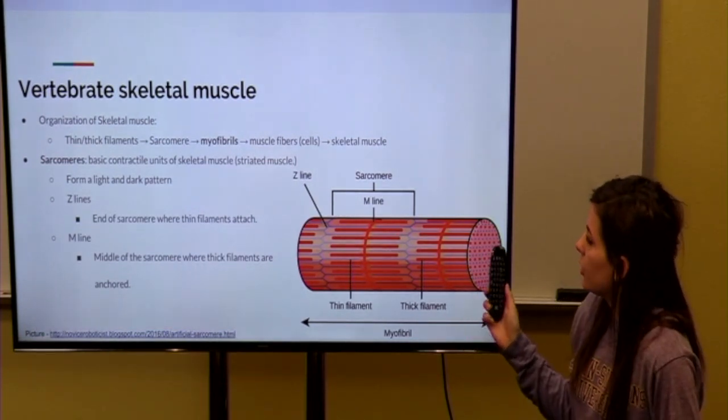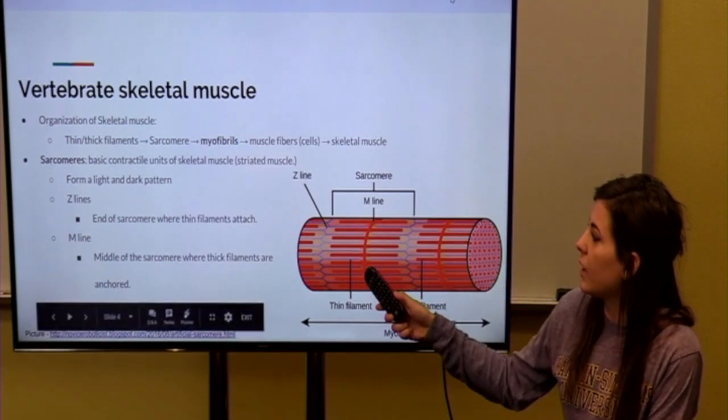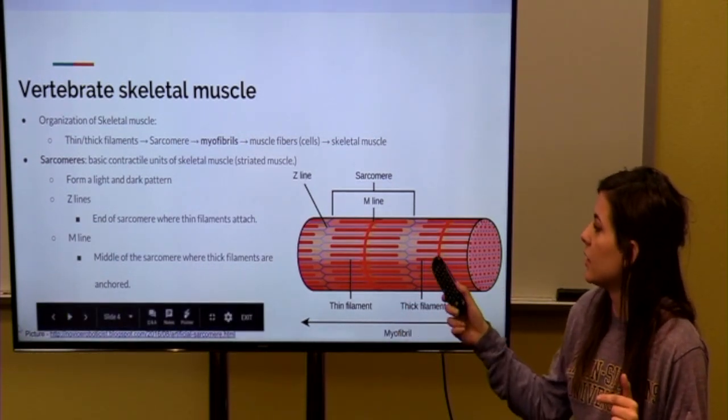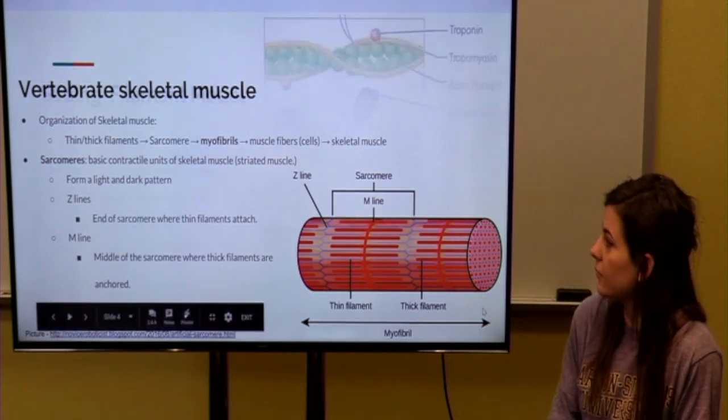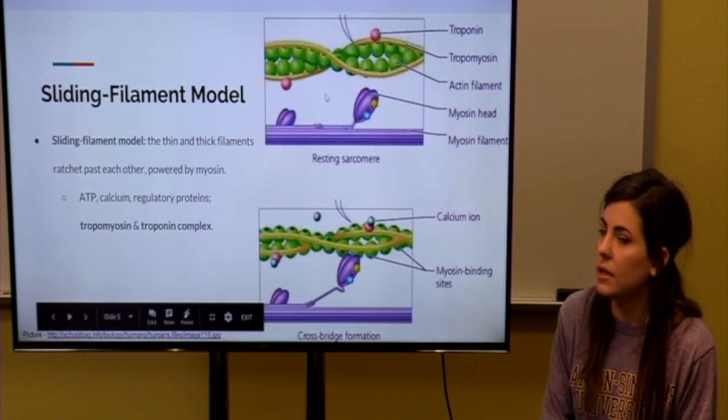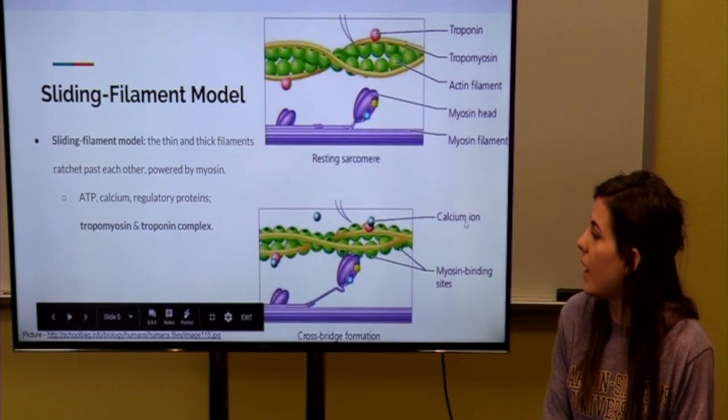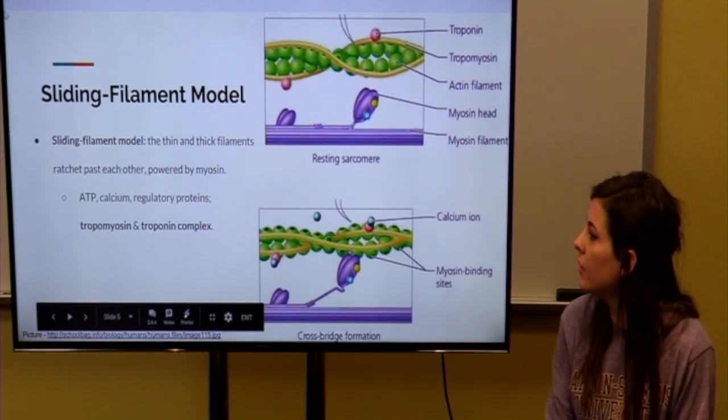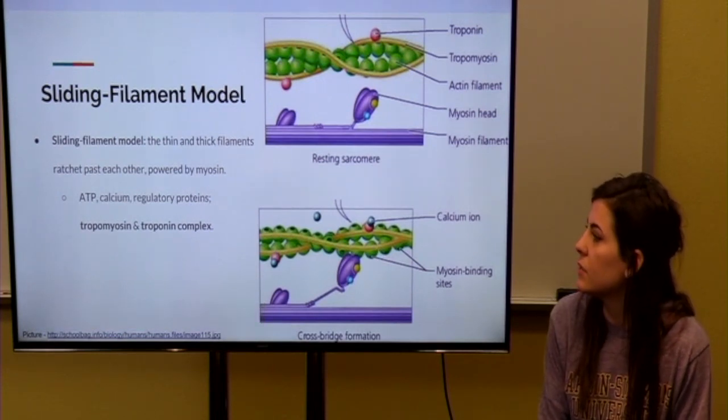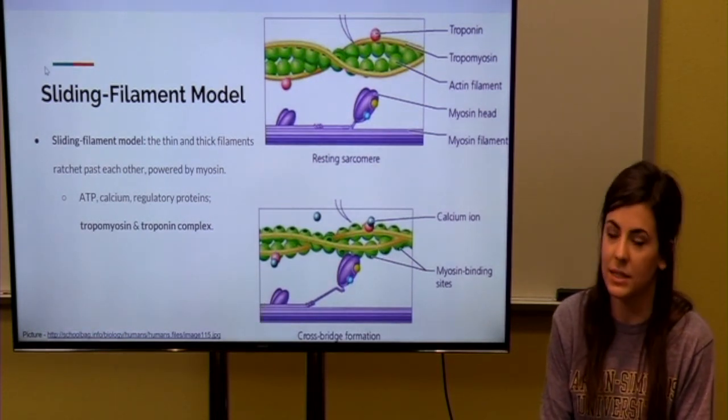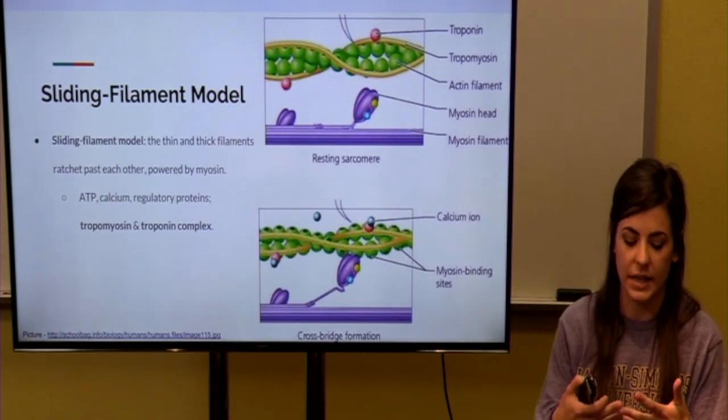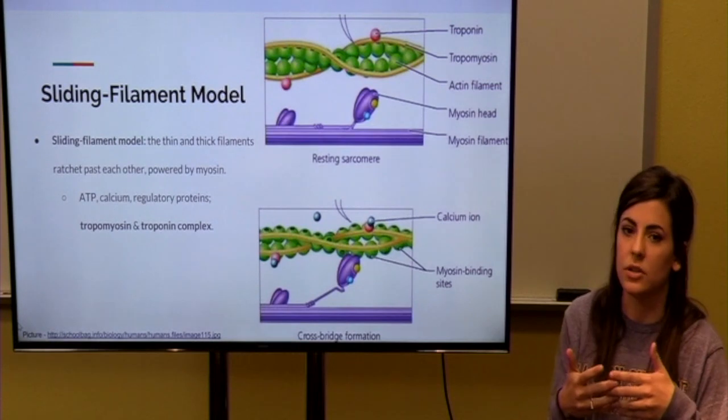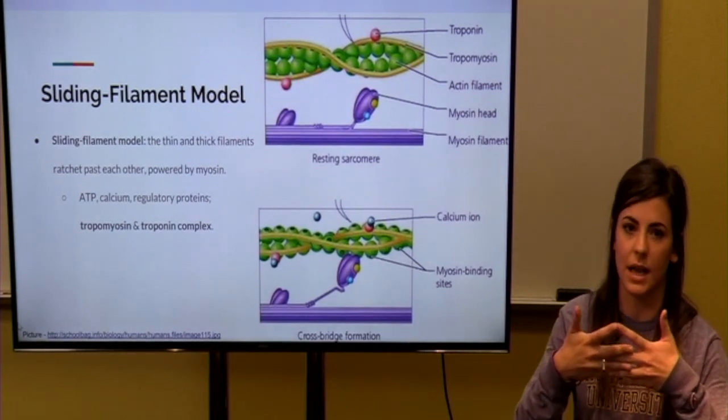And here in the sarcomere, you have the z-line where each sarcomere connects, and in the middle of the sarcomere, which is the M line. And our skeletal muscle functions with this model called the sliding filament model. And this is when the thin and thick filaments ratchet past each other, because they're not connecting, but one is on top of the other, so whenever the muscle contracts, these filaments slide past one another.